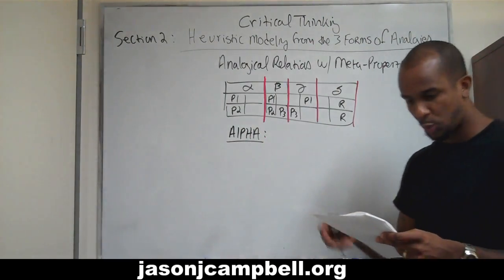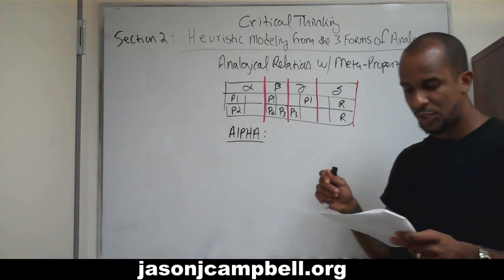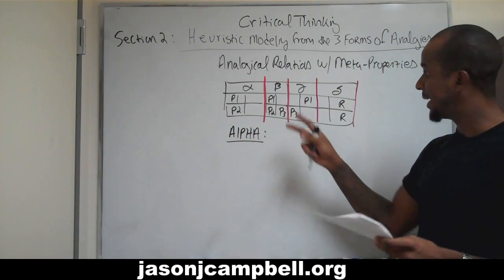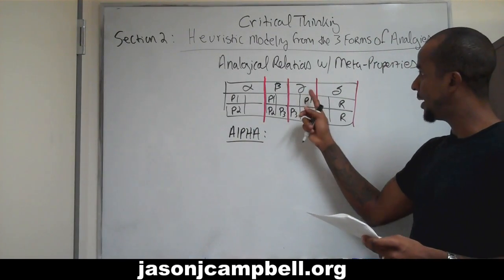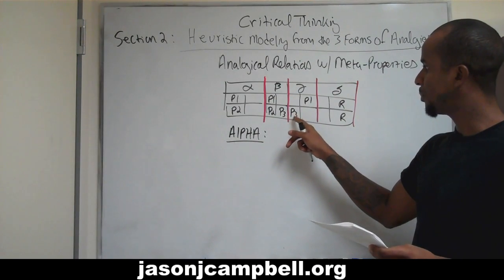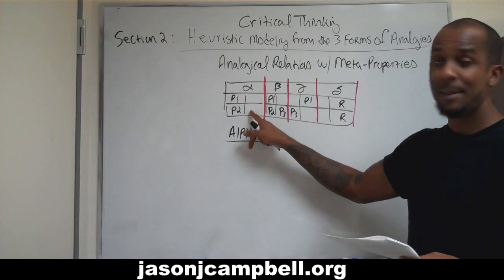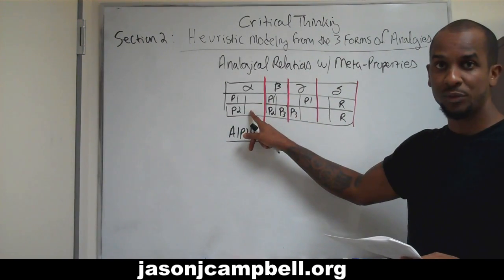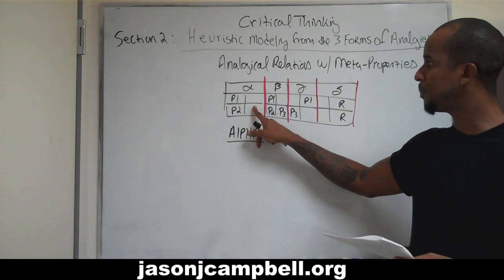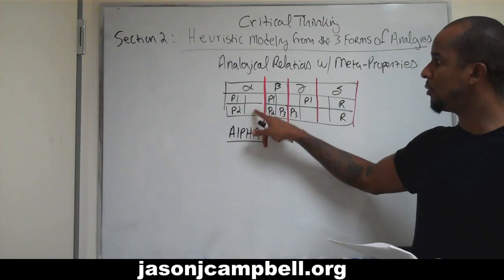Number three: alpha has a negative analogical relationship with respect to beta and gamma when analyzing P3. P3 is shared by beta and gamma but is absent in alpha — there is no P3 in alpha. So we see that beta and gamma have P3, but alpha does not.